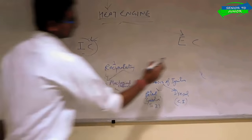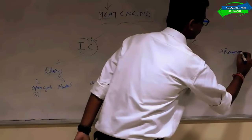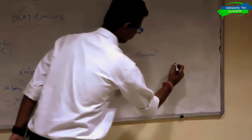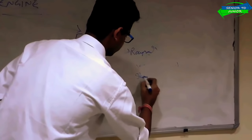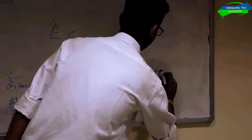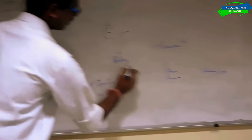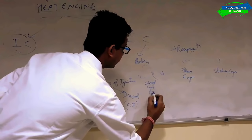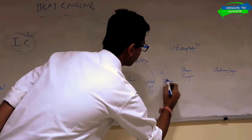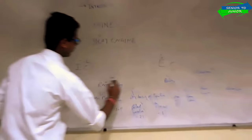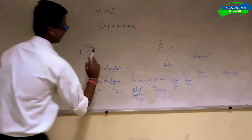Your external combustion engine is also of two parts: reciprocating and rotary. The reciprocating type is divided into two parts — steam engine and sterling engine. The rotary type is also divided into two parts — closed cycle gas turbine and steam turbine. You don't need to worry about these parts; just focus on the IC engine reciprocating classification, as this will be the most important part we proceed with in the next lecture.